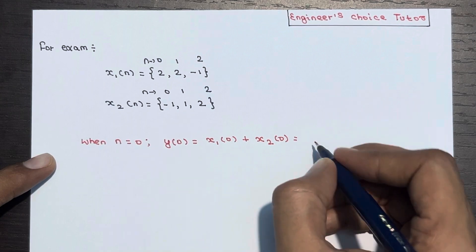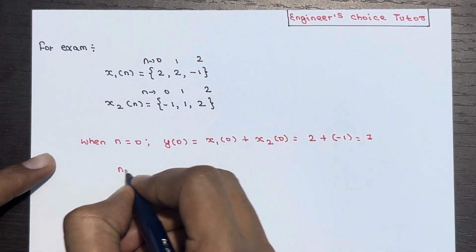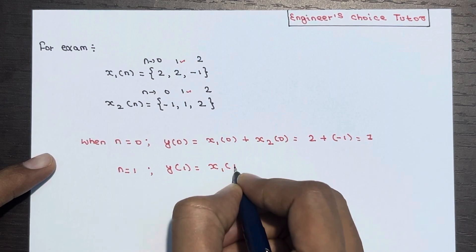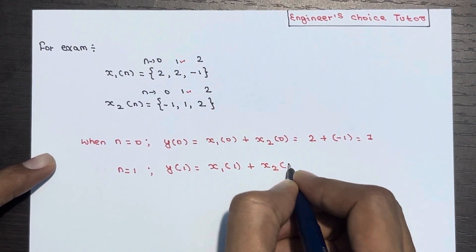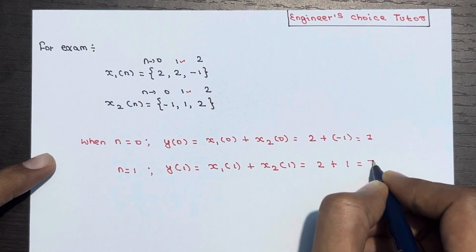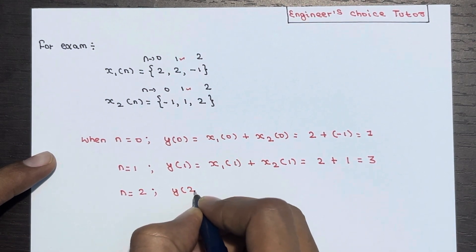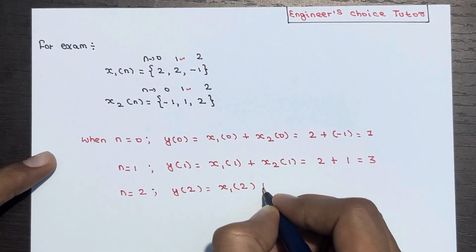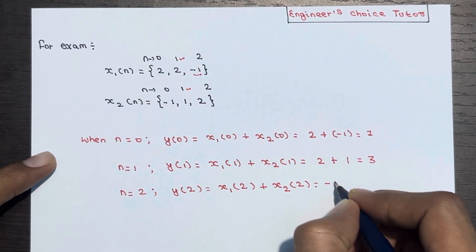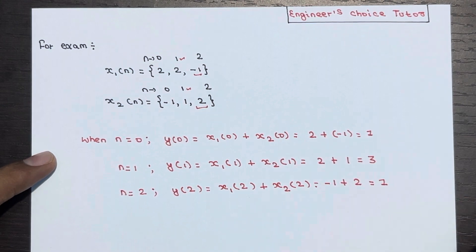Going sample by sample: x1(0) is 2 and x2(0) is -1, so y(0) equals 1. When n equal to 1: x1(1) is 2 and x2(1) is 1, so y(1) equals 3. When n equal to 2: y(2) equals x1(2) plus x2(2). x1(2) is -1 and x2(2) is 2, so -1 plus 2 gives y(2) equal to 1.